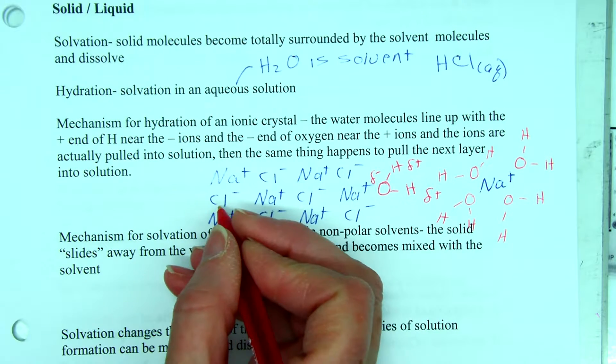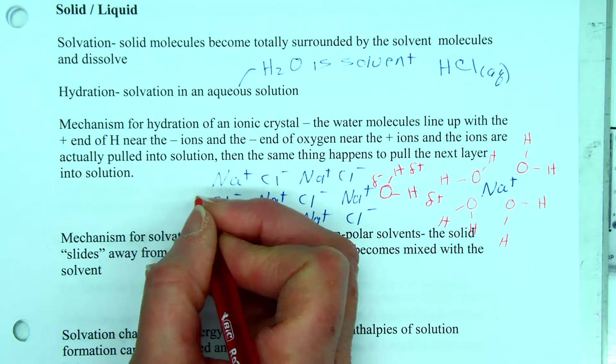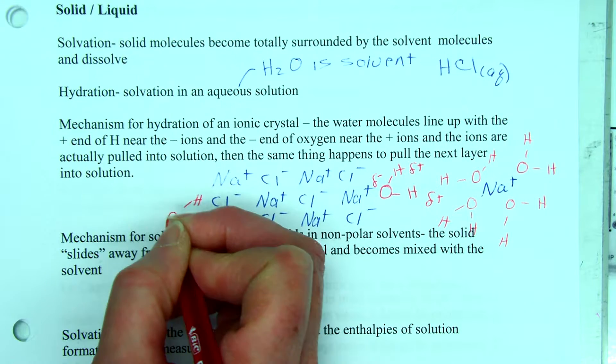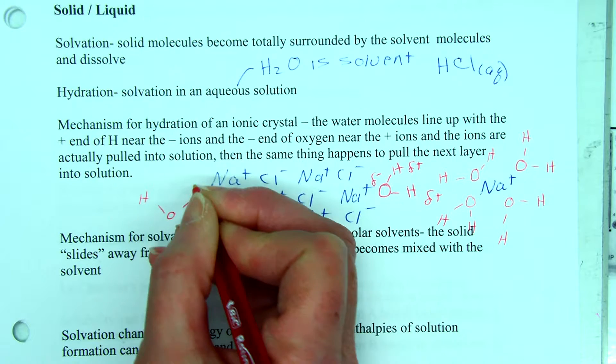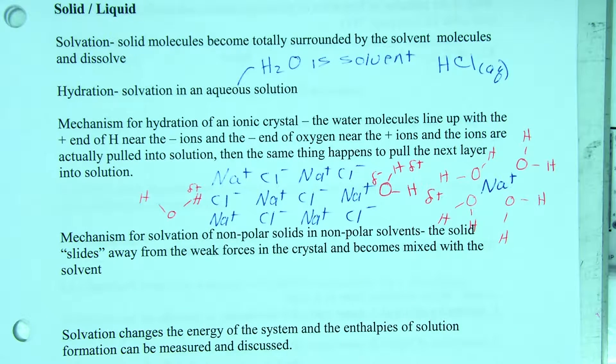Now on the other side we've got chloride ions and the opposite same thing happens. The water comes in here but this time we send the partial positive charge of the hydrogen in to sort of pull the chloride ion out, and then we surround the chloride ion or solvate it again with the hydrogen end in.